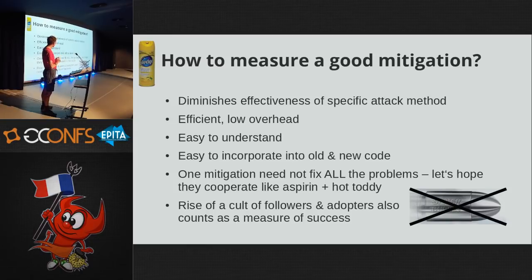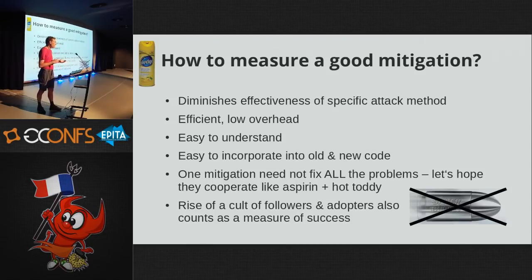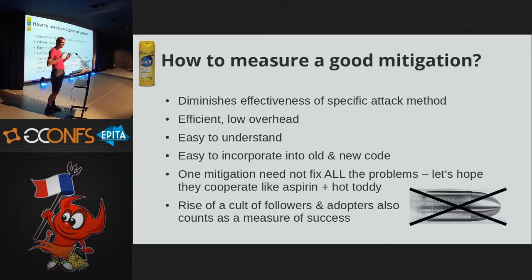A good mitigation should diminish the effectiveness of an attack and have low overhead - nobody wants a 5% slowdown for safety. In managed languages, garbage collectors are sometimes too slow and people stop using them. The mitigation should be easy to understand so people don't get confused as to whether it's causing problems. We shouldn't assume one mitigation solves a wide set of problems - it might only solve one problem in one way. But sometimes two or three mitigations near each other can combine into a slightly stronger surface.